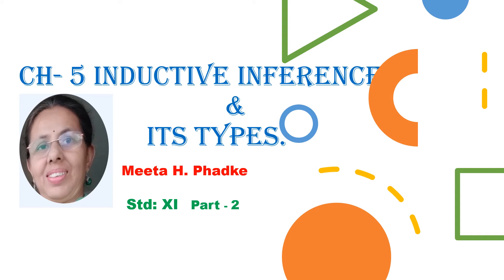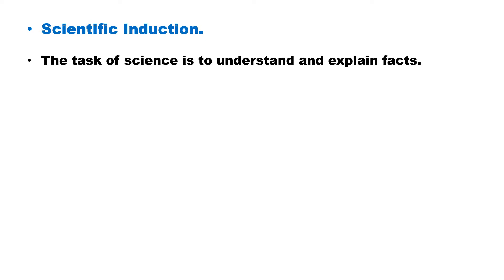Good afternoon. We will be studying chapter 5, inductive inference and its types, part 2. Now we will do the third type of induction, that is scientific induction. The main task or aim of the scientist is to understand and explain the facts. So let us see what is scientific induction.